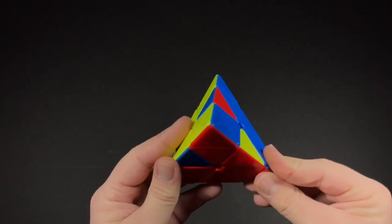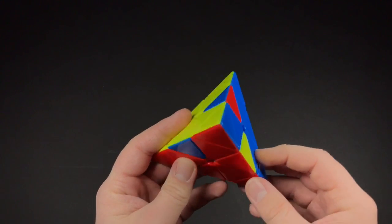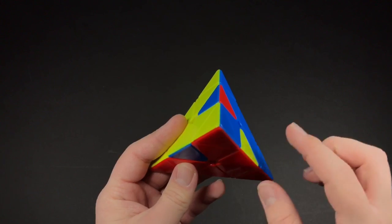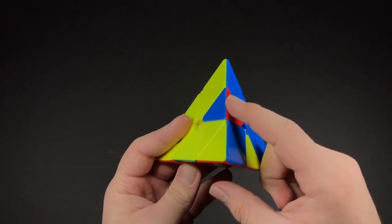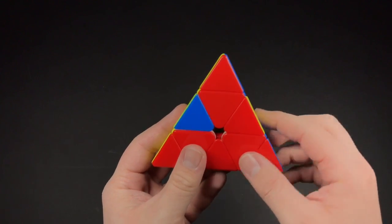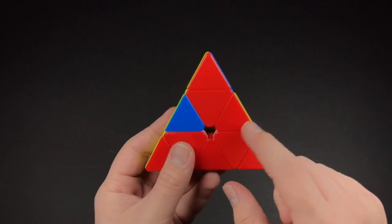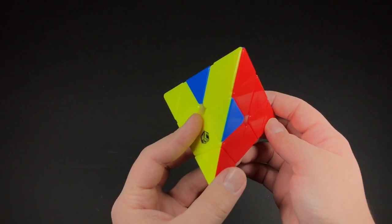Okay, and then the last case is this one. So it's just like, it's the mirror of the last one, so you have the random edge in the back, and the matching one is on the right, so it looks like this.